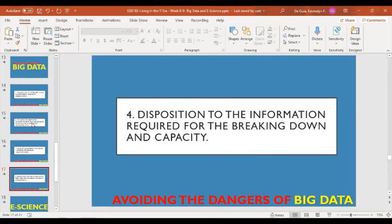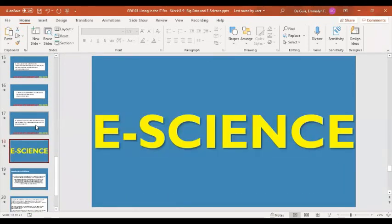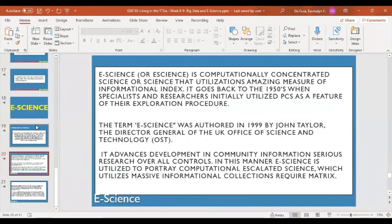So those are inputs or tips on how to avoid the dangers of big data. Now let's proceed to e-science. E-science is computationally concentrated or the utilization's measure of informational index. It goes back to the 1950s when specialists and researchers initially utilized PC as a feature of their exploration procedure. The term e-science was coined in 1999 by John Taylor, the director general of the UK Office of Science and Technology or OST.